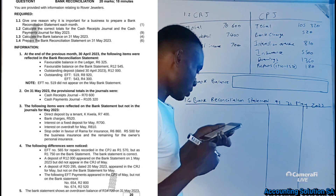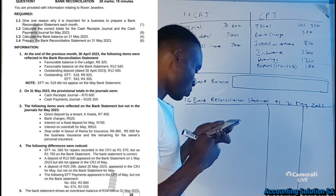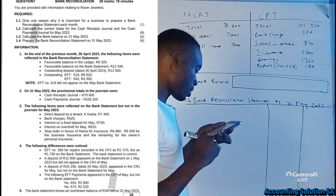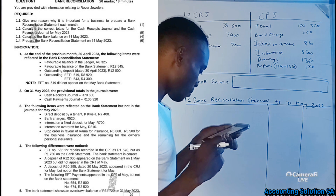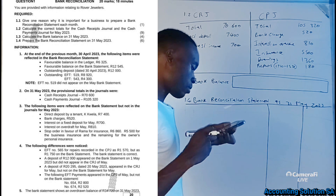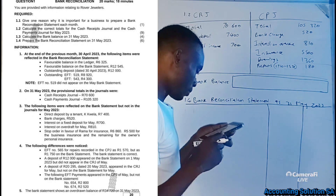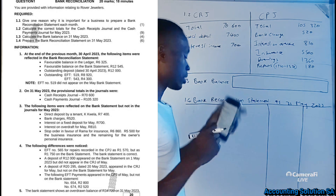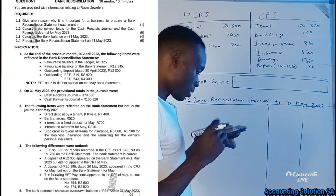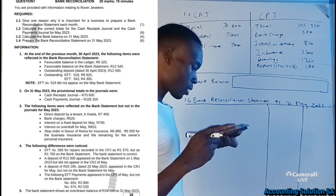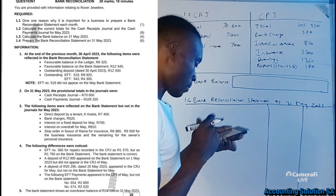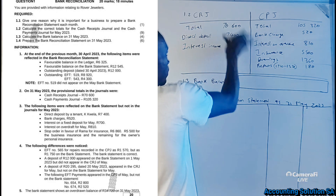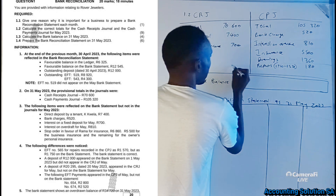Number three: a deposit of R20,295 dated 20 May 2023 appears in the cash receipts journal for May but not on the bank statement for May — this is called an outstanding deposit under the bank reconciliation statement. The following EFT payments appear in the cash payment journal but not on the bank statement — we will deal with those when we get to the reconciliation.